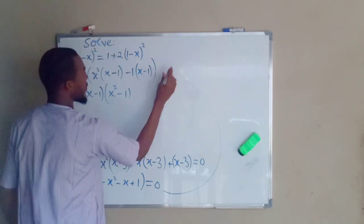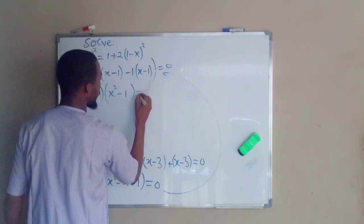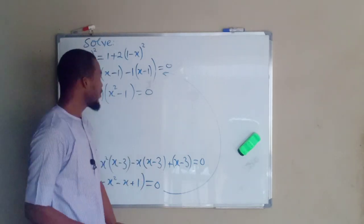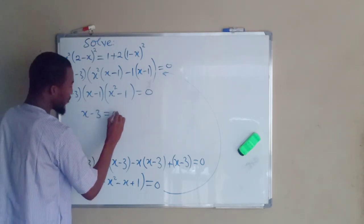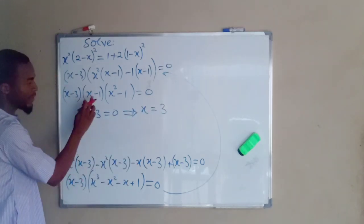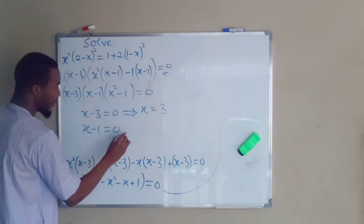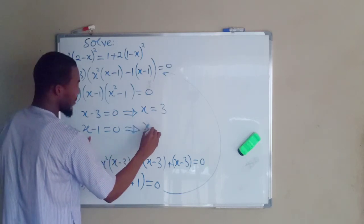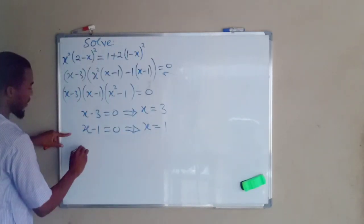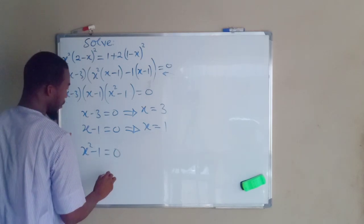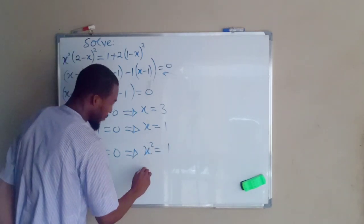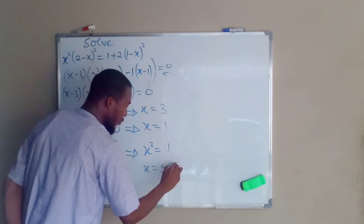The whole expression equals zero. We set each factor equal to zero. The first factor: x minus 3 equals 0, which implies x equals positive 3. The second factor: x minus 1 equals 0, which implies x equals positive 1. The last factor: x squared minus 1 equals 0, which implies x squared equals 1, and then x equals plus or minus the square root of 1.